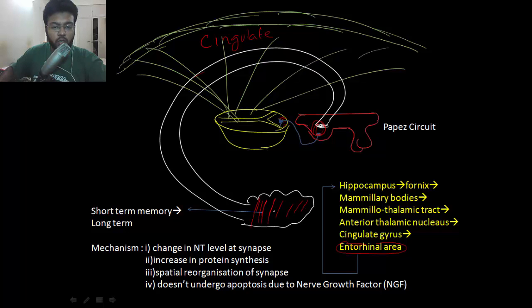The structure which converts short-term memory into long-term memory is the hippocampus, and there are various mechanisms by which memory is modulated.